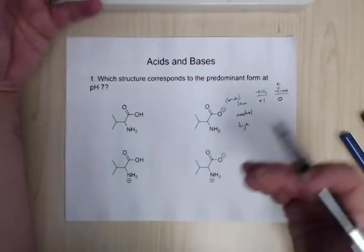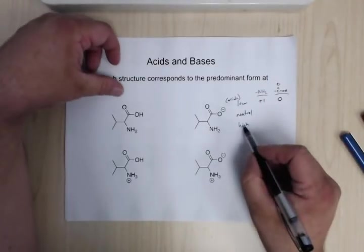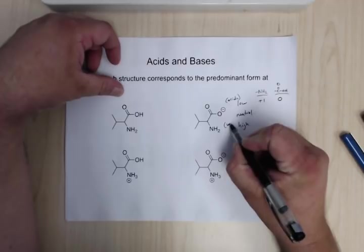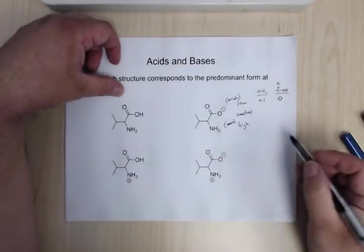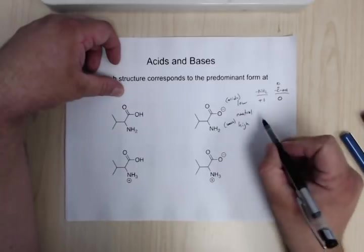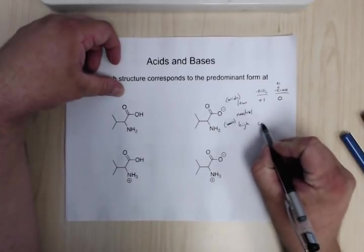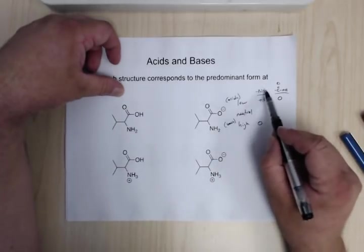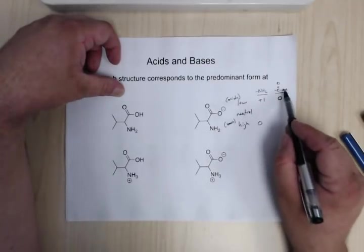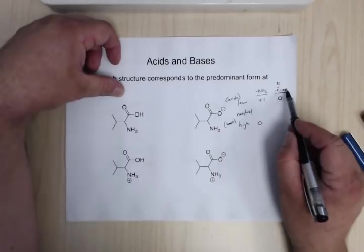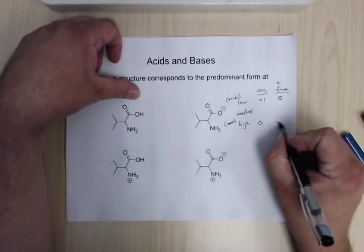At neutral, well I should say at high pH, so this is basic, it's going to want to be deprotonated. So here, it's going to be zero charge, and you're not going to have any protons around to make this a plus one charge. But this hydrogen here is going to get ripped away from the carboxylic acid, so that's going to be a negative one.